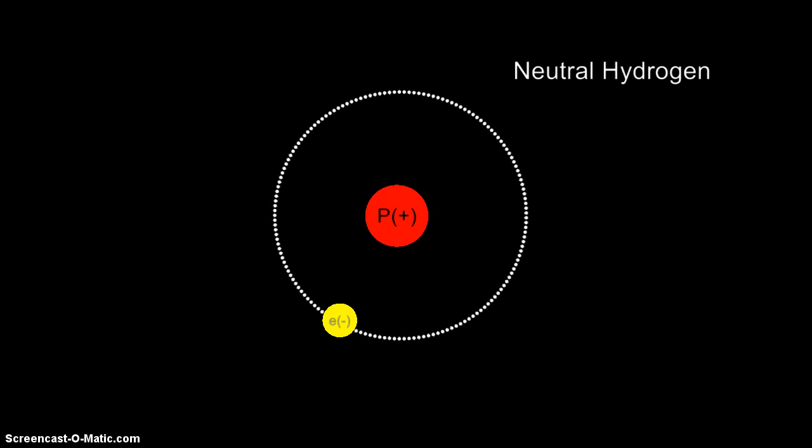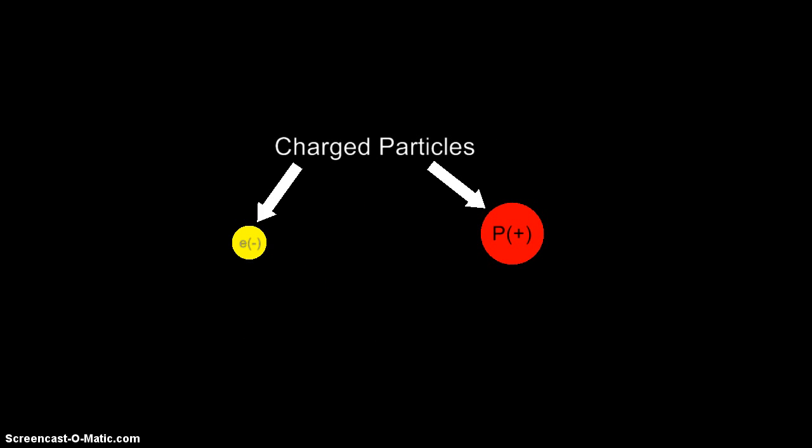However, the most abundant form of matter is not actually neutral matter, but plasma. Plasma is a state of matter where all the electrons have been stripped from the nucleus, leaving negatively charged and positively charged ions.